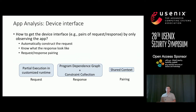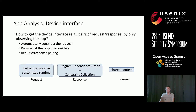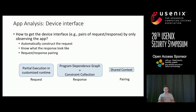The question is how to get the device interface — the pairs of request and response the IoT device can receive or generate — by only observing the app. There are three steps: how to automatically generate the request without accessing the physical device, how to know what the response would look like, and how to do the pairing between request and response given many asynchronous interactions.